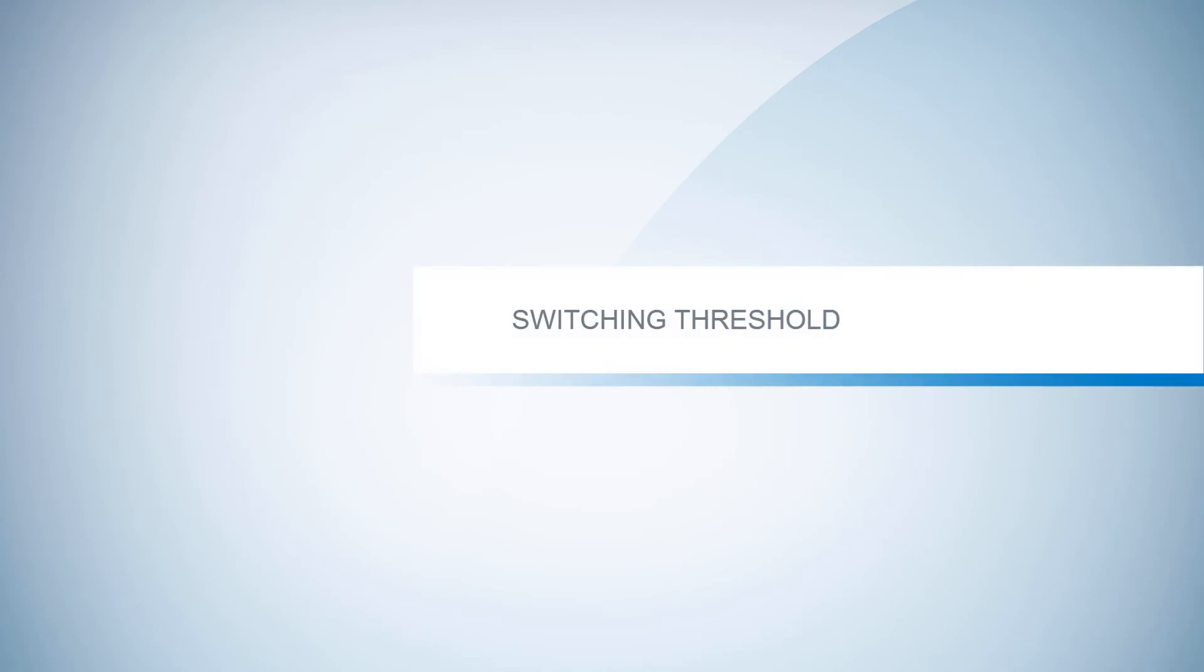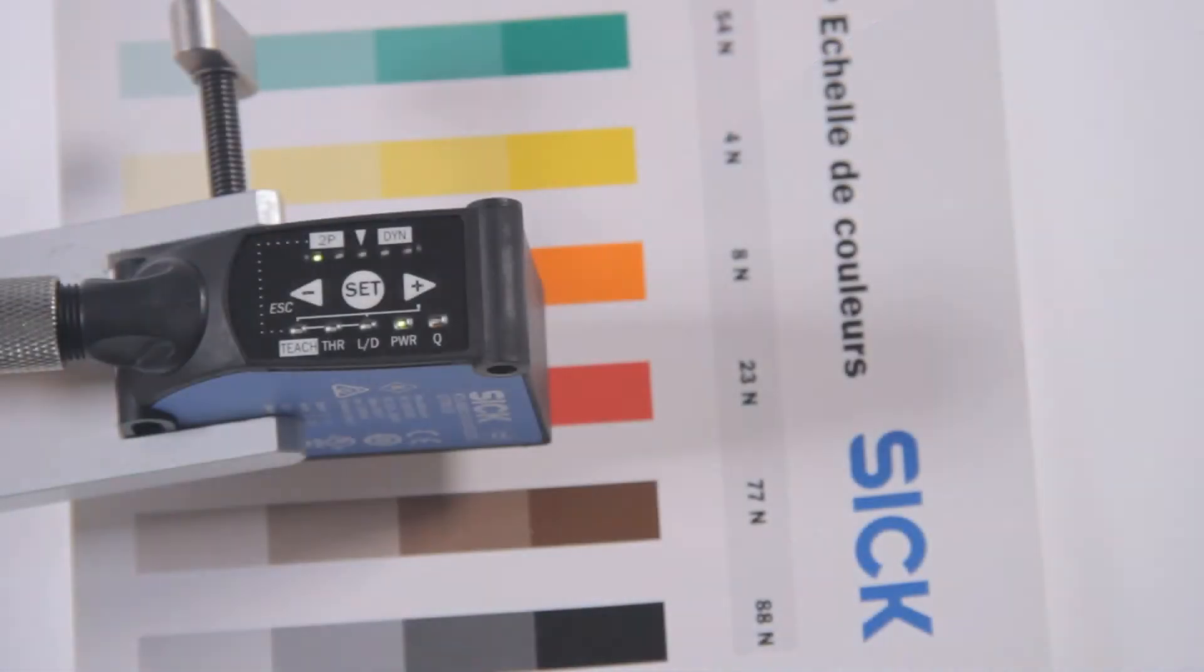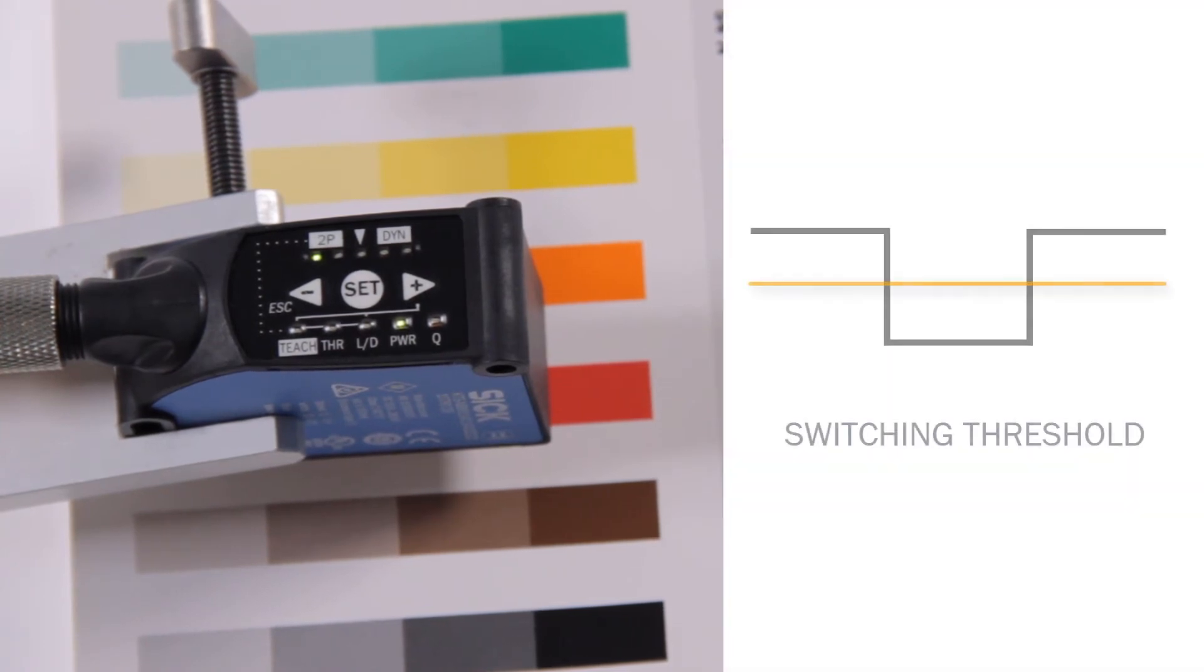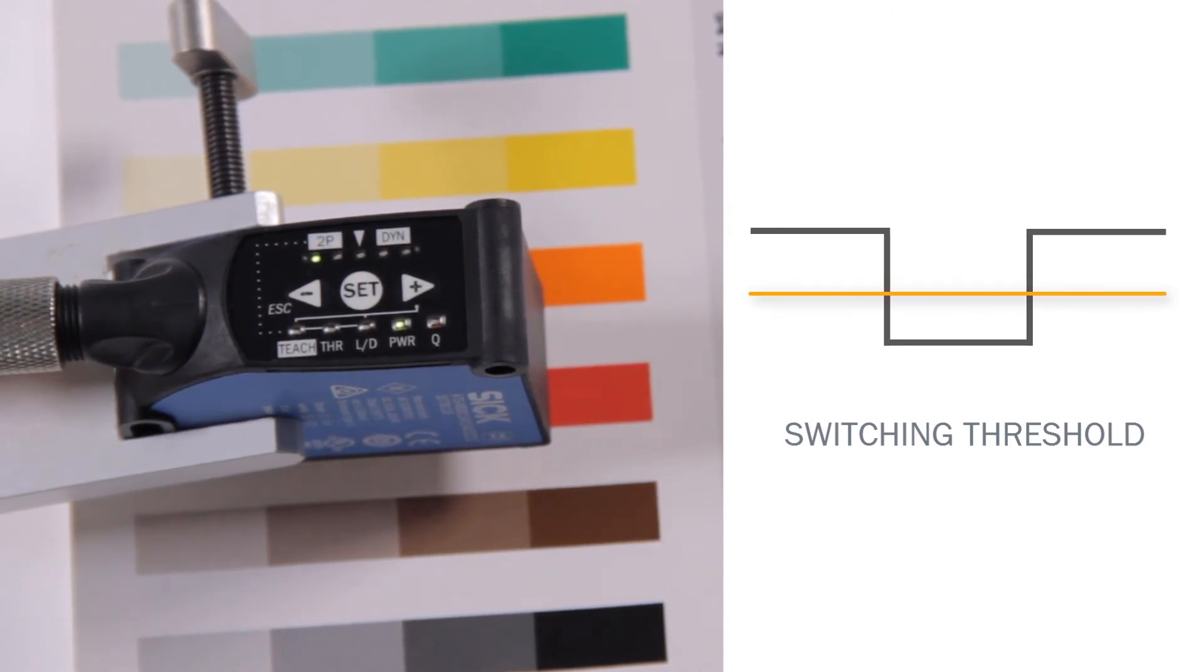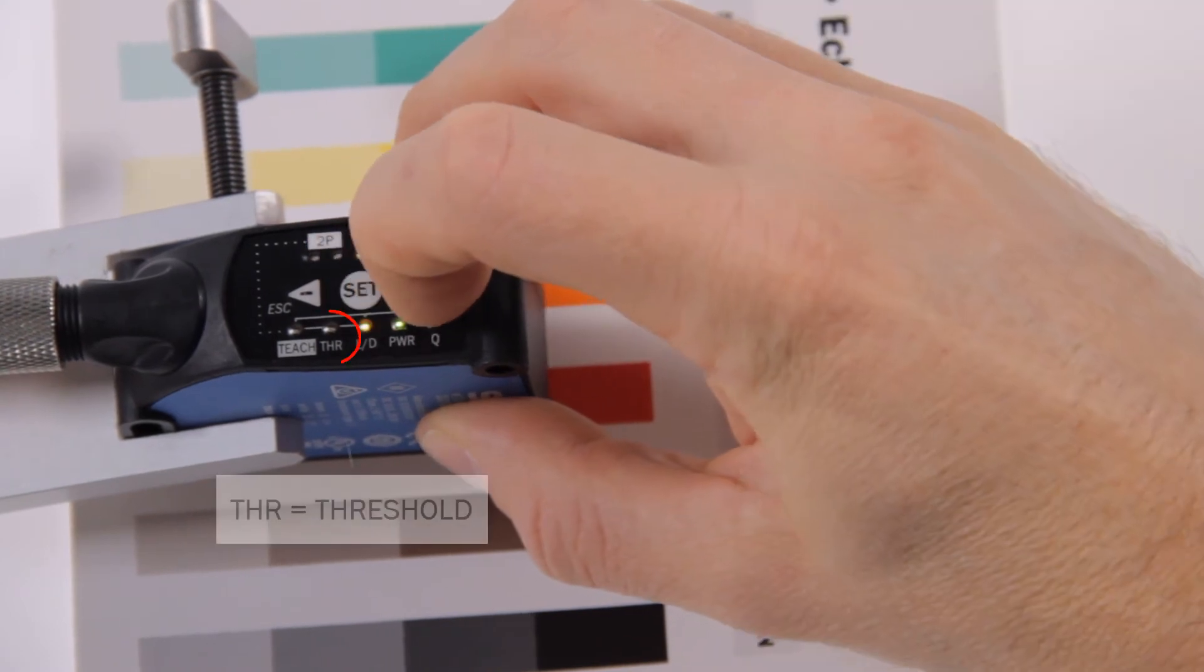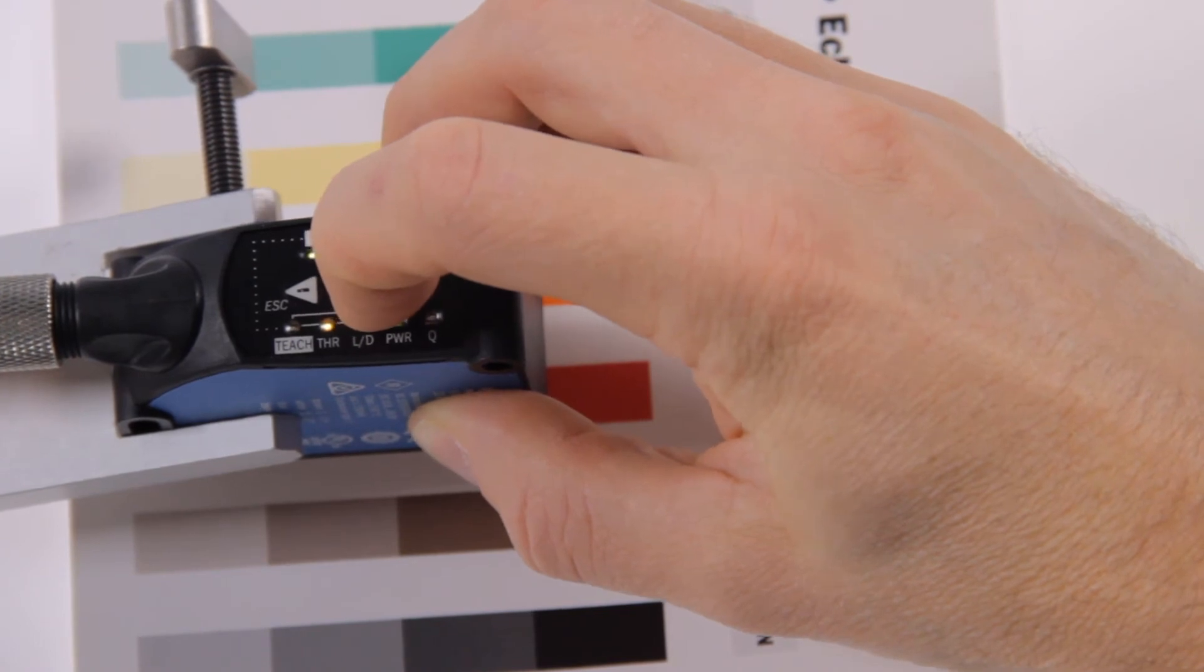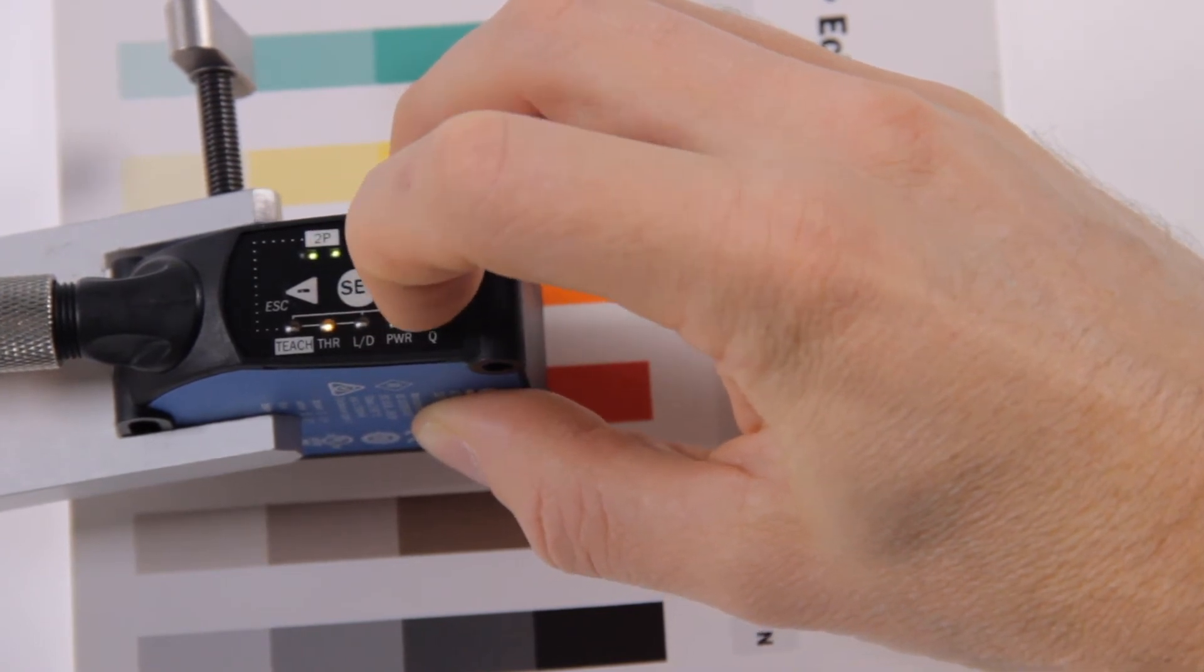Switching threshold. The switching threshold is set automatically after the teach-in and represents a switching threshold of 50%. This value can be adjusted by moving the yellow LED indicator with the plus and minus buttons to THR for threshold. Confirm with SET. Use the plus and minus buttons to adjust the threshold.